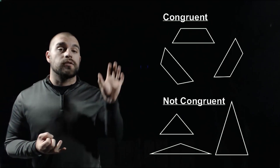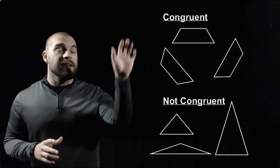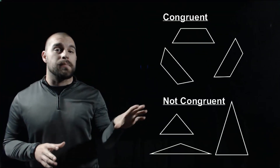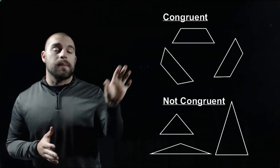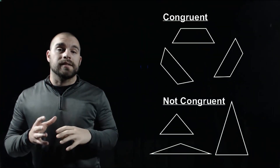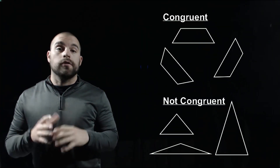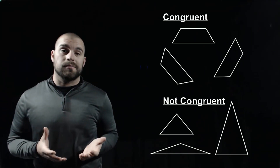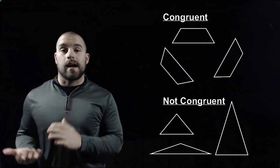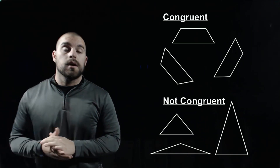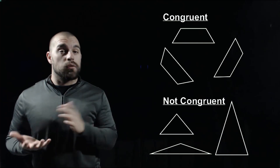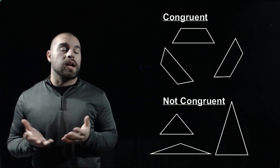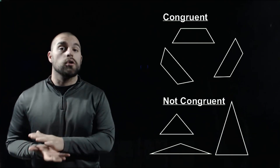We've got two groups of shapes to look at. On the top we've got some trapezoids, on the bottom we've got some triangles. Those trapezoids are examples of congruent figures because they're all exactly the same size and exactly the same shape. Now some of them have been rotated or spun around a little bit, but that's okay — we haven't changed what the picture looks like at all.